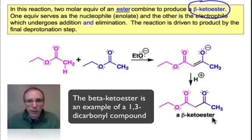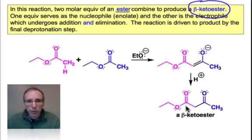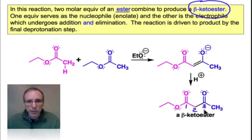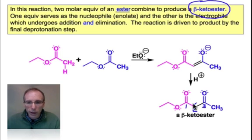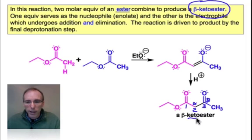Let's see why this is a 1,3-dicarbonyl compound and also why we call it the β-ketoester. If we start with the carbonyl of the ester functional group and number that 1, the position next to it 2, the ketocarbonyl group is in position 3 — so it's a 1,3-dicarbonyl compound. Why is it a β-ketoester? Again, if we start with the carbonyl of the ester group, the sp3 carbon next to it would be an α carbon, and the next position over would be the β position, where there's a carbonyl group of a ketone. So it's a β-ketoester.